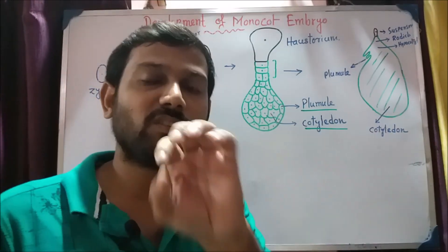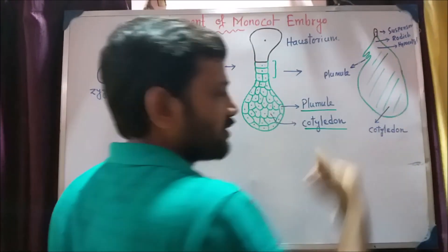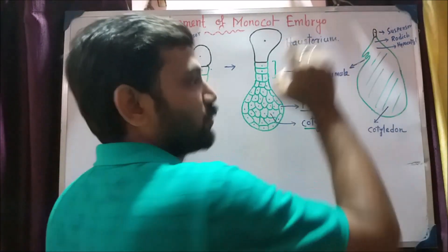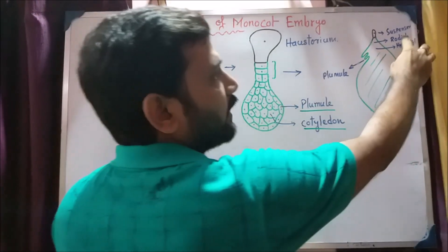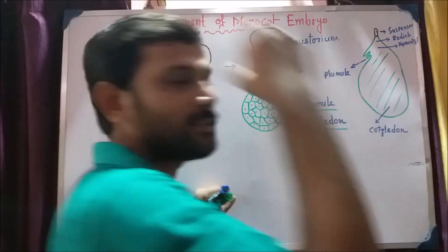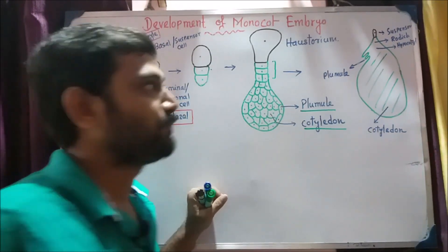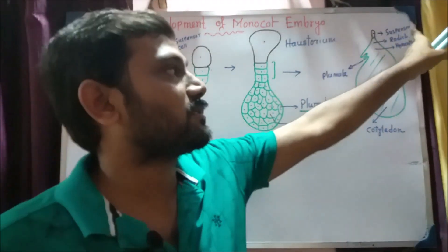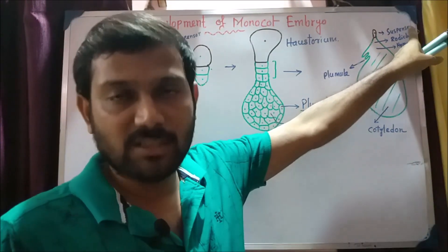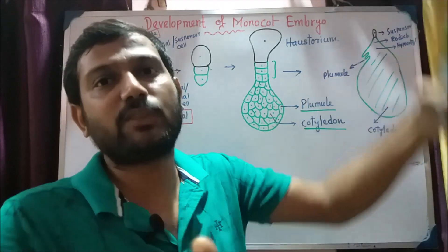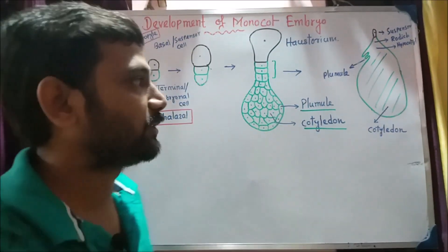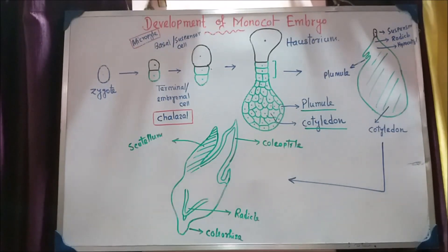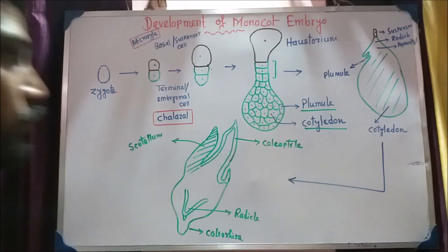This is an embryo. The suspensor is part of the story. Now let's go from the developmental stage and look at the last stage. The last stage of development is the final stage.